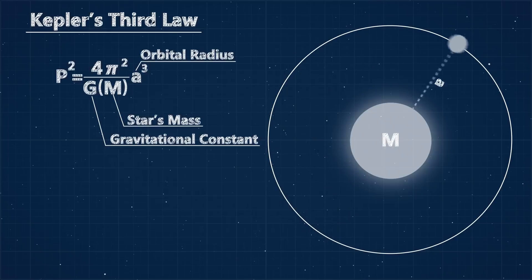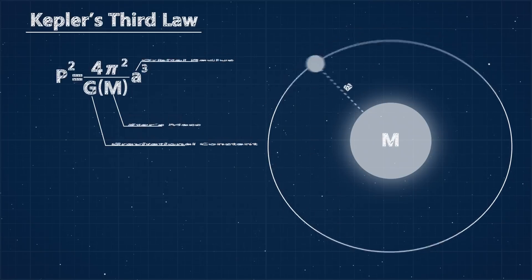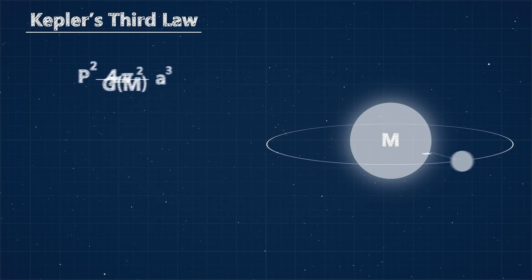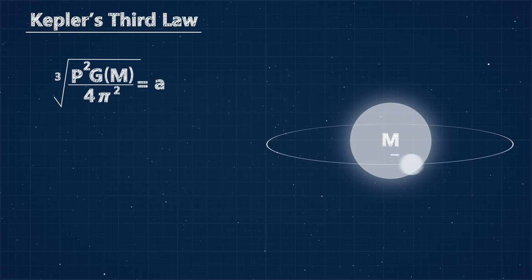If we do this for Earth, it introduces an error of just 0.001%. The period is measured by seeing the time between transits. And so we have all the variables we need to calculate the orbital radius. Now that we know how far away the planet is, figuring out its diameter from the transit dimming is simple.